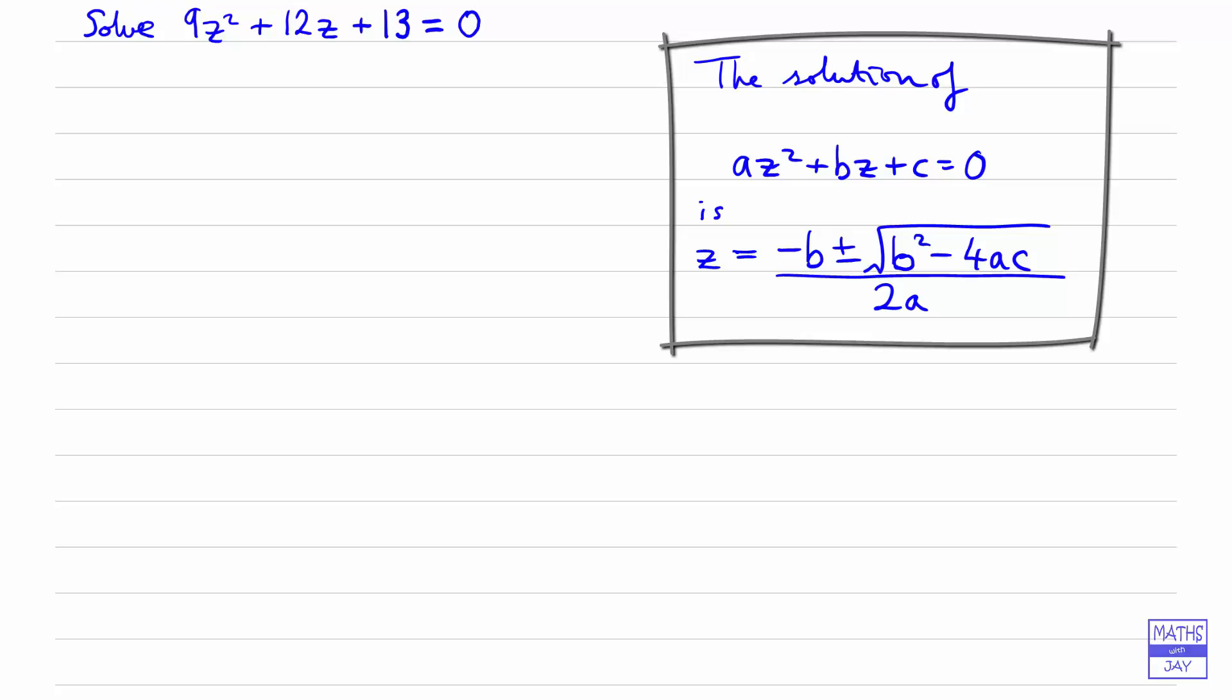So substituting into the formula gives us that z equals minus 12 plus or minus the square root of b squared—so 12 squared—minus 4 times a, so that's 9, times c times 13, and that's all over 2 times a, so 2 times 9.